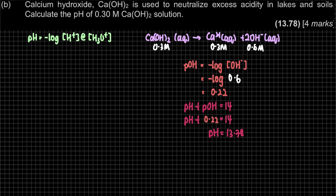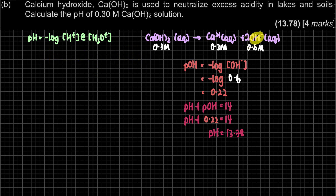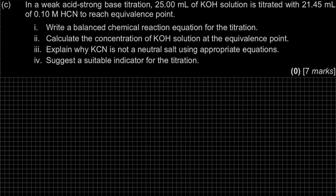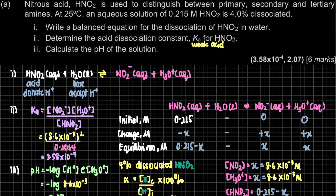So for question B, the question asked for pH but this is a base, so we can't directly use pH = −log[OH⁻]. We first find pOH from [OH⁻], then use pH + pOH = 14 to get pH = 13.78. Question C will not be discussed in this video — it has been covered in a separate video which I will link in the description. That is the solution for question 6 of PSPM 2019-2020.